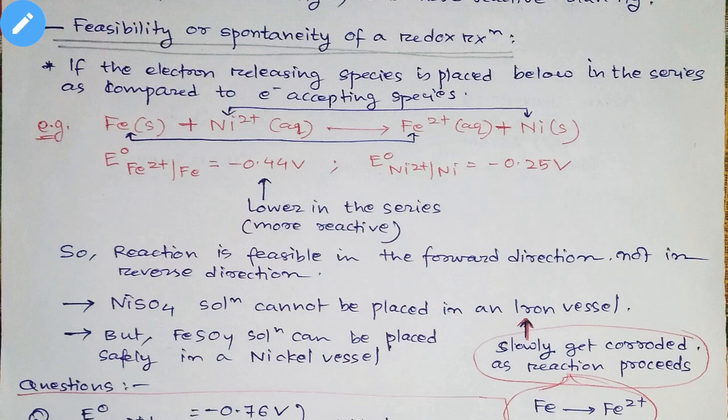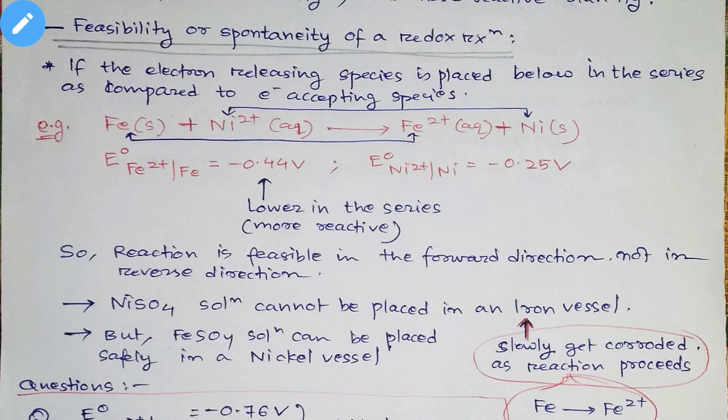This is the electrochemical series which I made in the previous video — you need to go and see that. How to find out which electrode or which metal is higher or lower in the series. The values I have taken from there: E⁰ for Fe²⁺/Fe is minus 0.44 V, and E⁰ for Ni²⁺/Ni is minus 0.25 V. These values are taken from the electrochemical series.